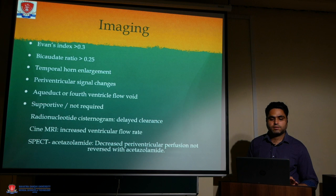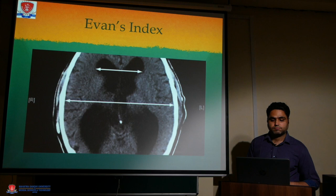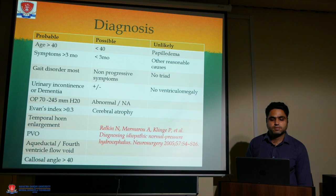Imaging findings: Evans index greater than 0.3, bicaudate ratio greater than 0.25, temporal horn enlargement, periventricular signal changes, and aqueduct or fourth ventricular flow are supportive but not required. Radionuclide cisternogram shows delayed clearance. MRI demonstrates increased ventricular flow rate. Acetazolamide decreases periventricular perfusion, not reversed with acetazolamide. The Evans ratio, bifrontal, biparietal, and bicaudate ratio greater than 0.25 on MRI, and periventricular signal changes are key imaging criteria.